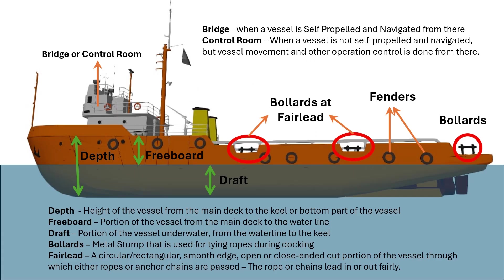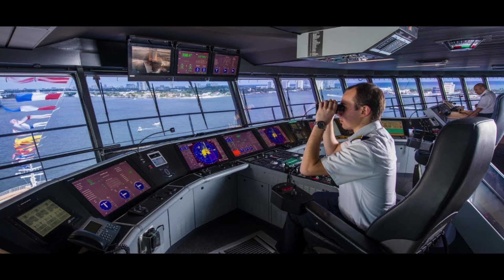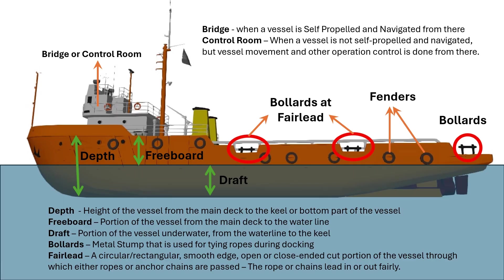Here are some fixtures a survey team needs to know. The bridge is a place normally high in the main superstructure from where the self-propelled vessel is controlled and navigated. When a vessel is not self-propelled but other machinery is housed there, it is called a control room.